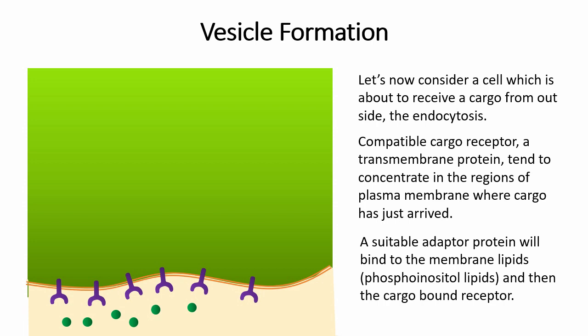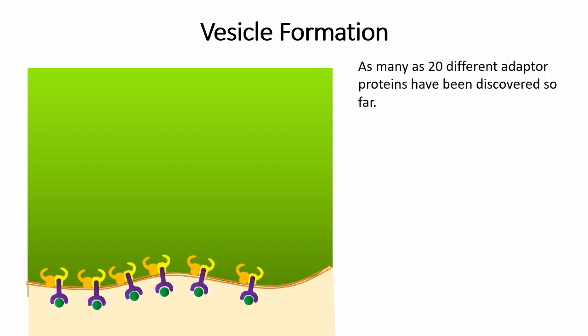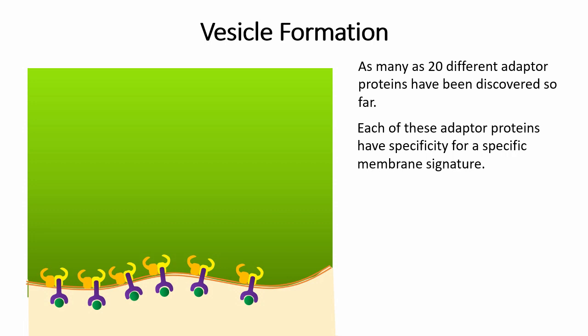A suitable adapter protein will bind to the membrane lipids called phosphoinositol lipids and then the cargo bound receptor. As many as 20 different adapter proteins have been discovered so far. Each of these adapter proteins have specificity for a specific membrane signature. Membrane signature is determined by phosphorylation status of phosphoinositol lipids. This accounts for the diversity of vesicles on the basis of their origin.